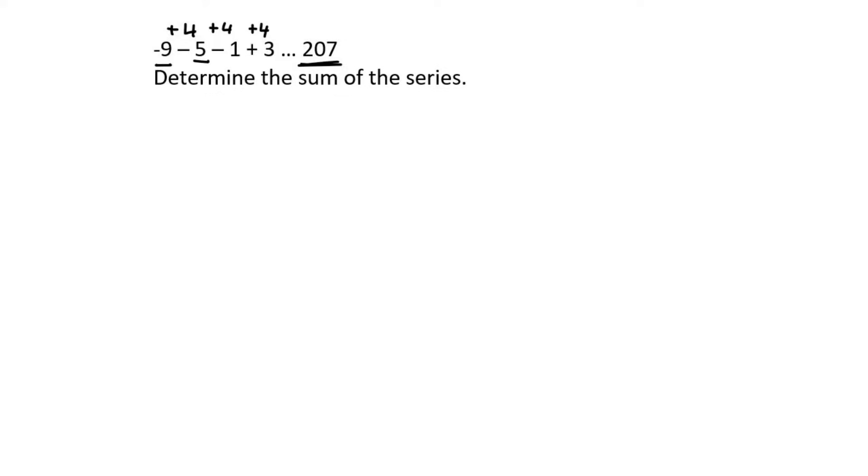So we need to find the sum formula of an arithmetic sequence. But the problem is we don't know how many terms we have. However we do know that the last term is 207.